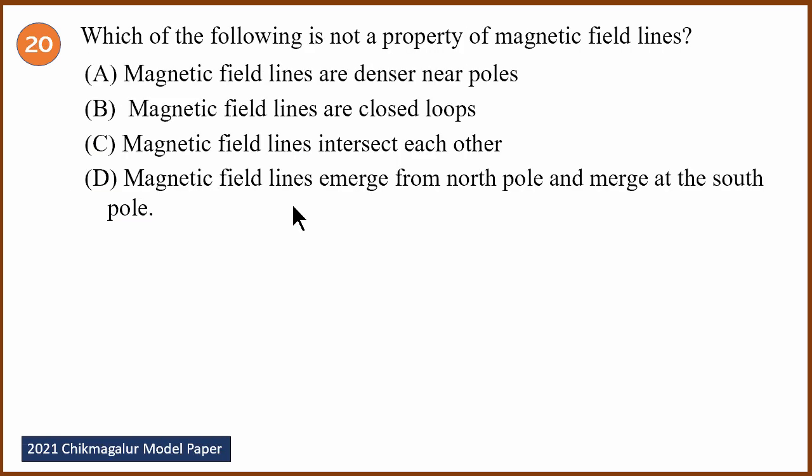Twentieth question — Chikmagalur model paper: which of the following is NOT a property of magnetic field lines? Option A: magnetic field lines are denser near poles — true. Option B: magnetic field lines are closed loops, going from north pole to south pole — true. Option C: magnetic field lines intersect with each other — this is WRONG, because magnetic field lines never intersect. So C is the incorrect property. We saw 20 questions in this video.